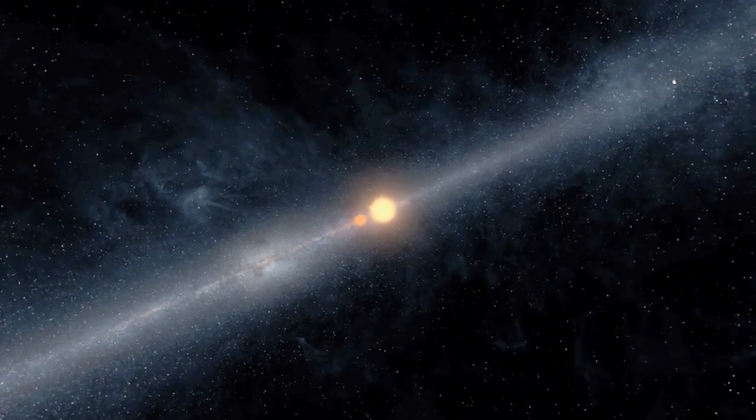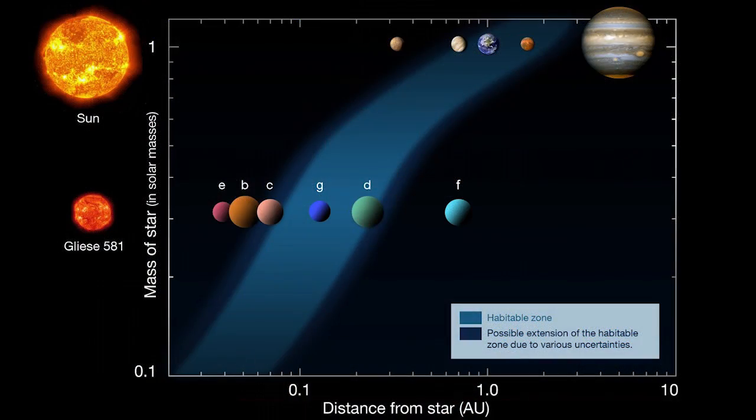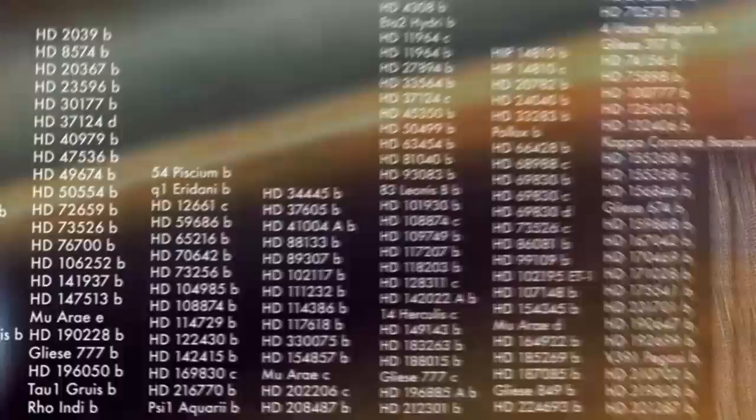Although many of these planets are quite different from Earth, it seems that at least a small percentage of stars do have planets at the right distance to support liquid water. That's a lot of potential Earth-like planets.